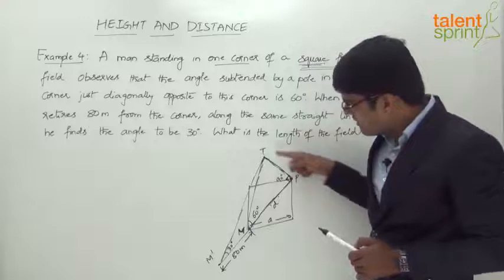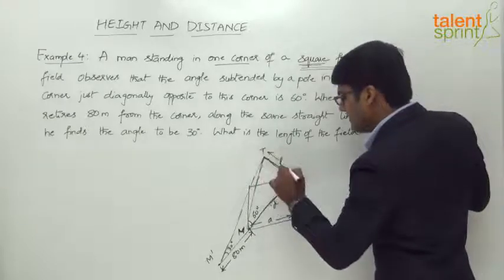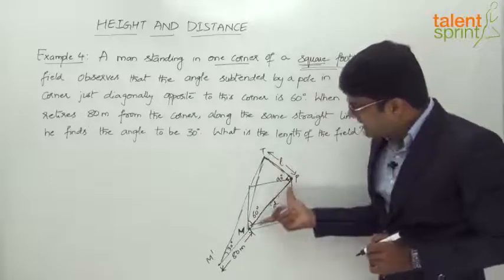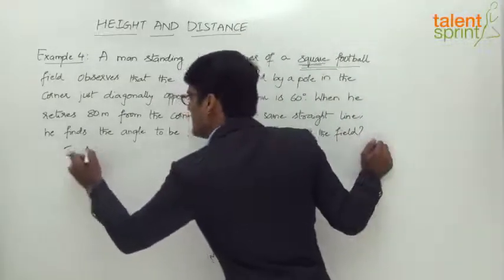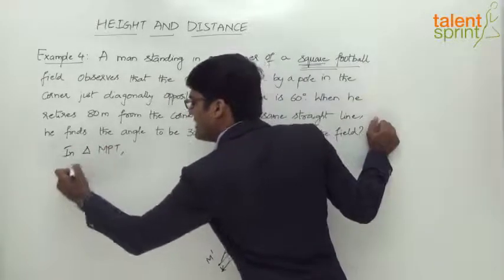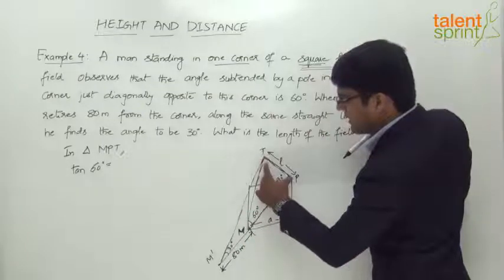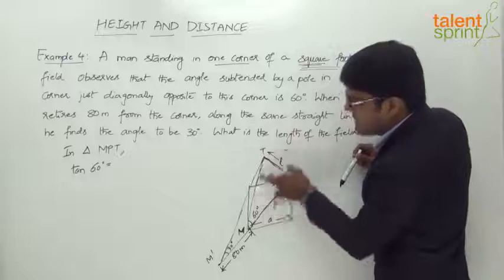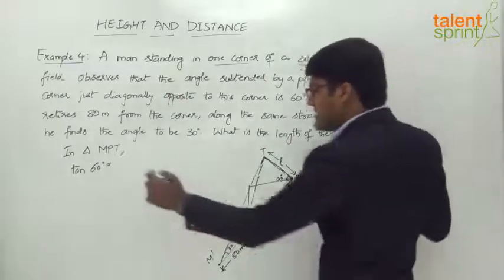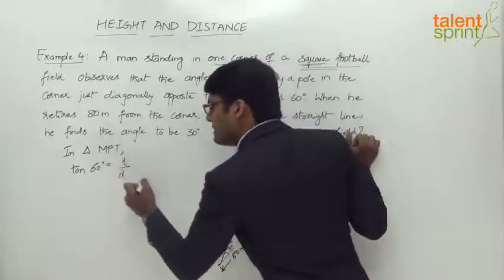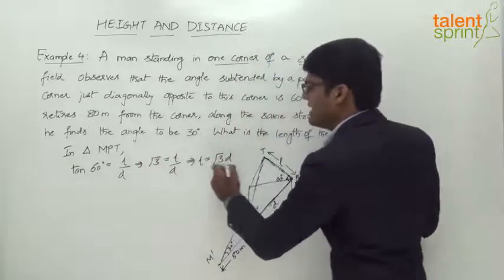In triangle P, T, M: the angle theta is 60 degrees. Let us say the length of the pole is L. Tan 60 — opposite by adjacent — will be equal to L by D, where L is the opposite (length of the pole) and D is the adjacent (the diagonal, which is the distance between M and P). Tan 60 equals root 3, so root 3 equals L by D, which gives us L equals root 3 D. That is equation number 1.